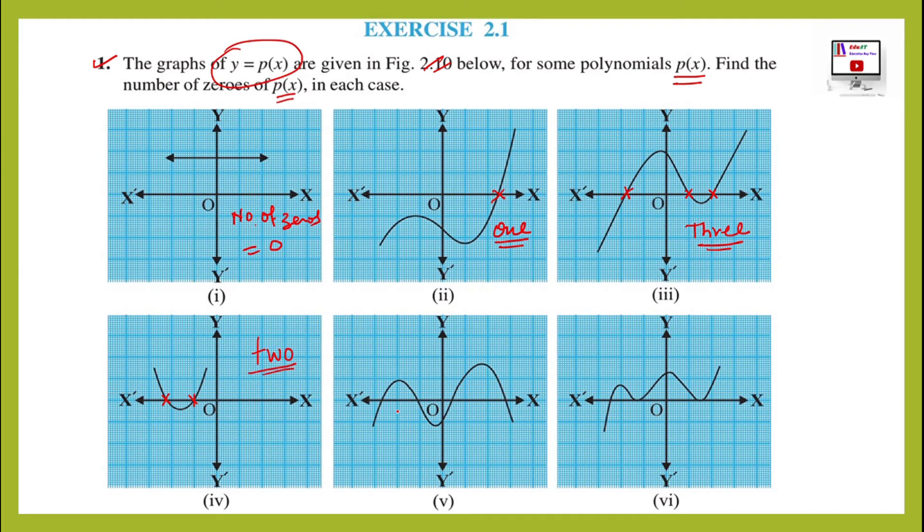Graph 5 ki baat kar hai. Number of intersecting points are this 1, 2, then this is 3, 4. Number of intersecting points are 4. In the case of 5, this graph is intersecting x-axis at 4 points. Number of zeros will be 4.